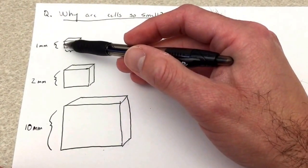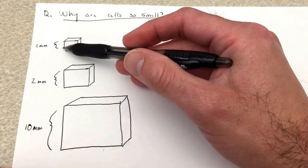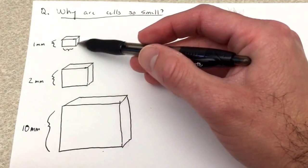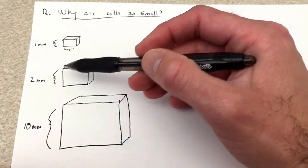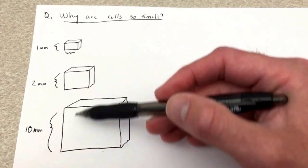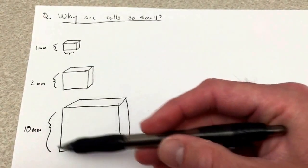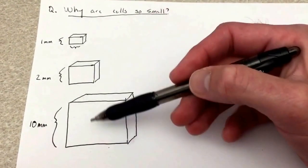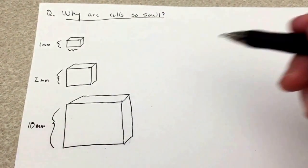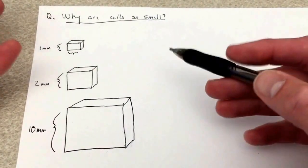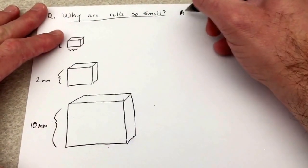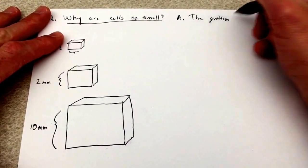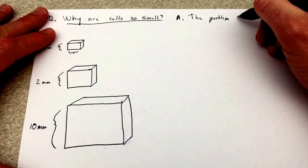Here is a one millimeter cube — one millimeter by one millimeter by one millimeter in length, width, and depth. Here's a two millimeter cube, and here is a much bigger cube of ten millimeter dimensions. Note that this is not to scale. So the short answer to this question — why are cells so small — is because of the problem of the surface area to volume ratio.